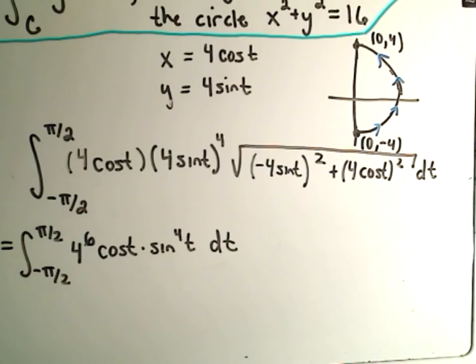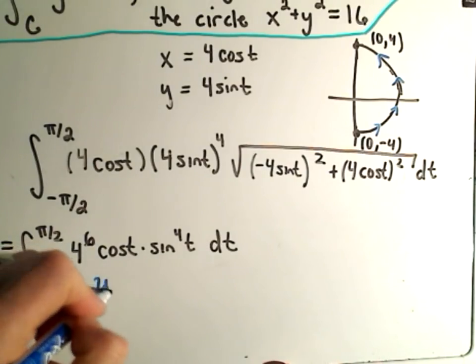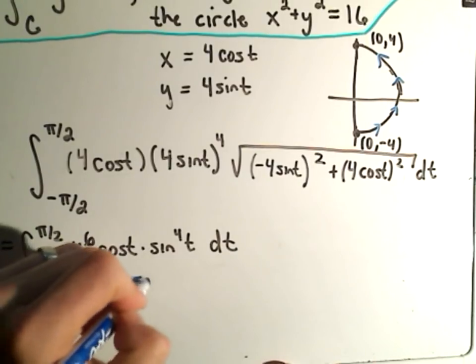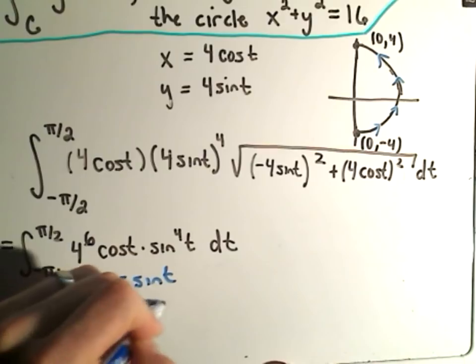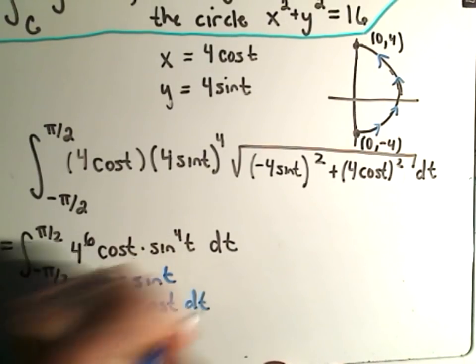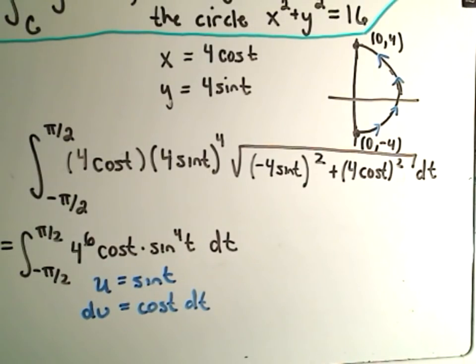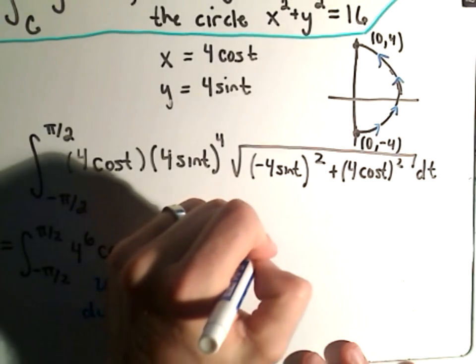Because this is relatively straightforward to integrate. I can let u equal sin(t). The derivative of that will be cos(t) dt. So now when I go to integrate this, I have to change my limits of integration.